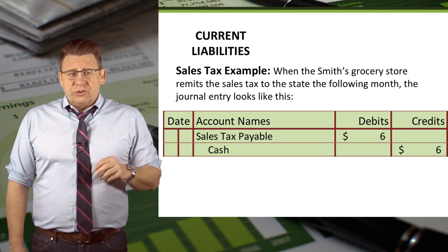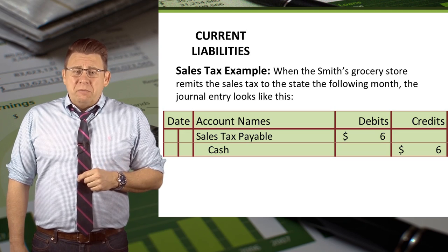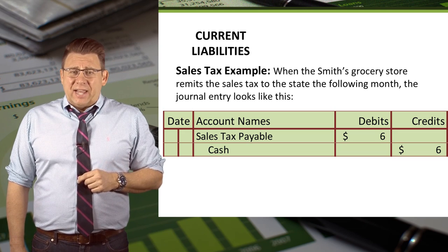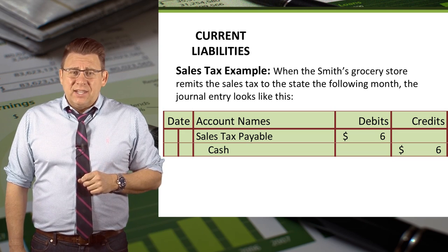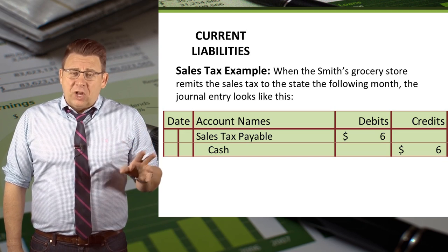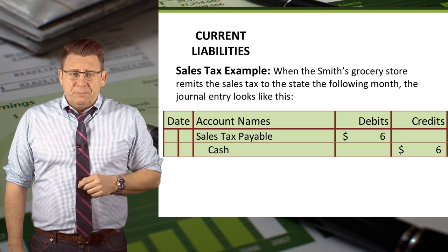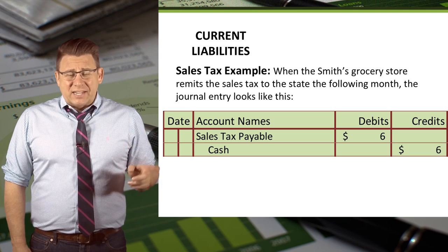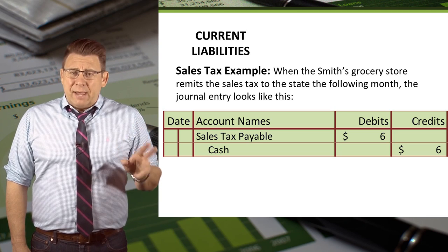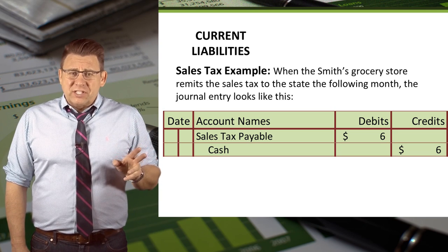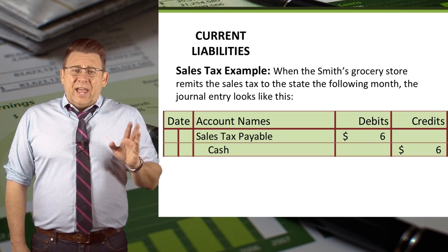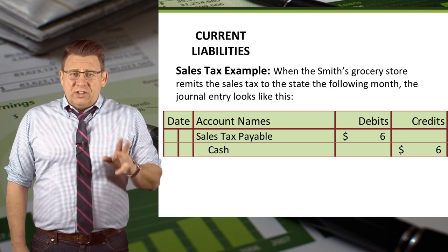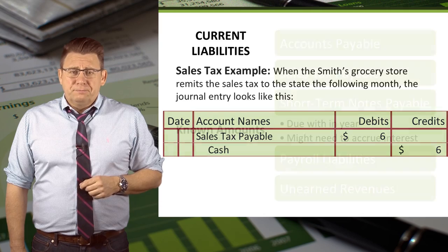When Smith's grocery store remits the sales tax to the state, they make the following journal entry: sales tax payable is debited for $6 and cash is credited for $6.